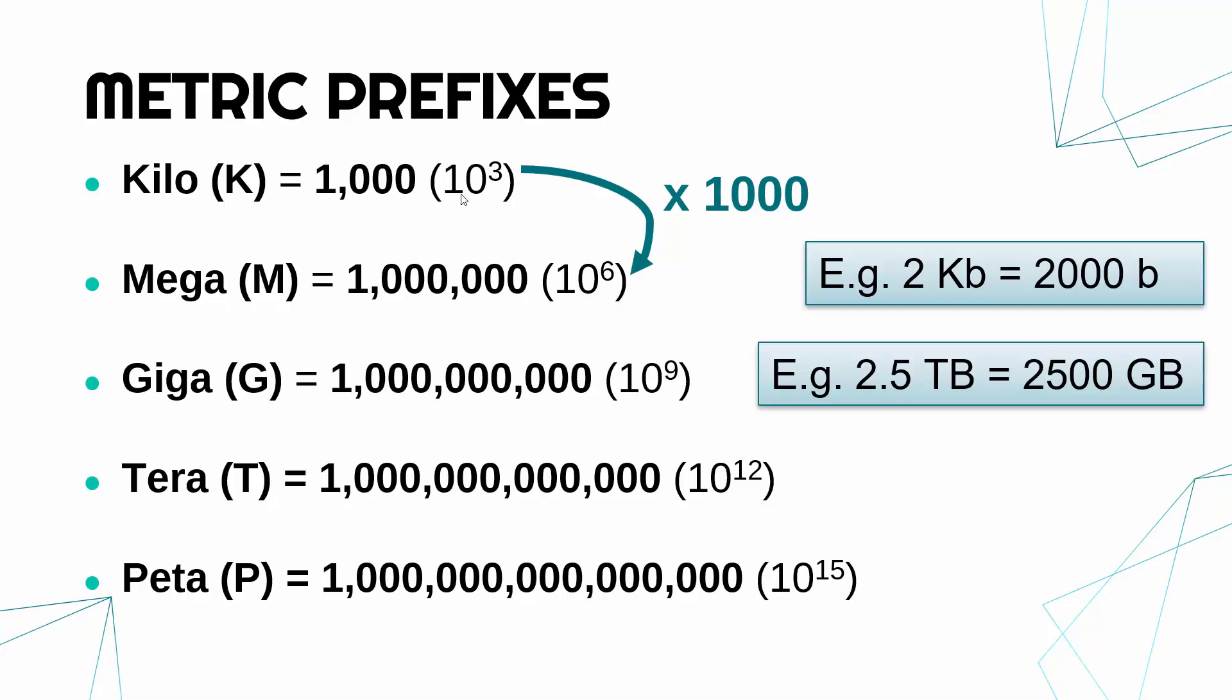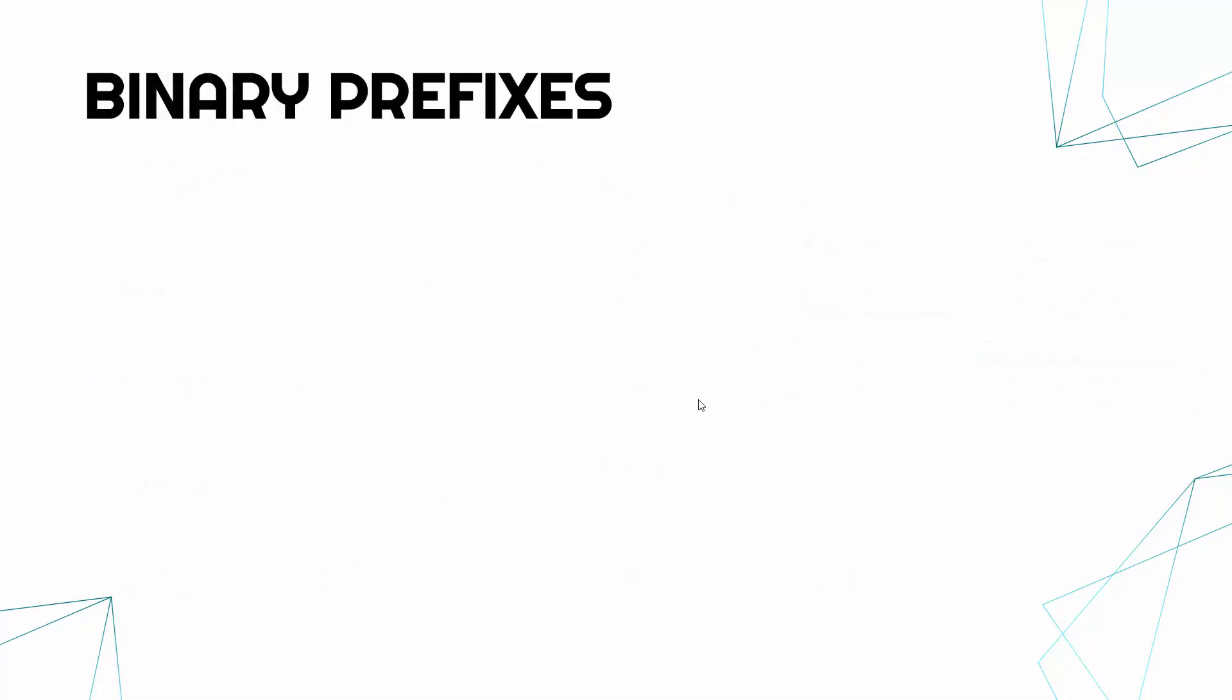Now there is a slight problem because these units are designed for decimal—we've got ten as our base in these powers. But actually we've got two when it's binary, so these don't quite work. They present a couple of issues.